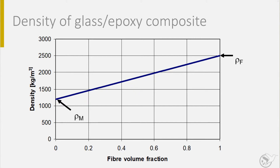I use the fiber volume fraction because we often use this parameter in our analysis and calculations. If there are no fibers in the composite — when it is a pure polymer — the density is equal to the density of the polymer, about 1200 kilos per cubic meter. If there was no polymer in the composite, the density would be equal to the density of the glass fibers, which is about 2500 kilos per cubic meter. For all other ratios, the line or equation can help find a first indication of the composite density. Note that most composites with short, long and continuous fibers have a fiber volume content in the range of 0.2 to 0.6, or between 20 and 60%.